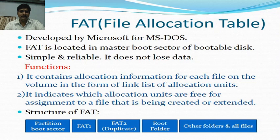FAT is simple and reliable — it does not lose any data. There are different functions of the FAT. First, it contains the allocation information of each file on the volume in the form of a linked list of allocation units. Second, it indicates which allocation units are free for assignment to a file that is being created or extended.